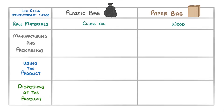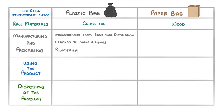For manufacturing plastic bags, the hydrocarbons from fractional distillation will need to be cracked to make alkenes, and then these can undergo polymerization to make plastics. Meanwhile for paper bags, the timber has to be pulped — broken up into little pieces and then soaked — which can require loads of energy and produces lots of waste.